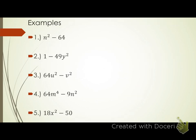Let's go ahead and move on and look at some examples. Number one: n squared minus 64. Step one, we first need to make sure that it is a difference of squares problem. Is there a minus sign between my two terms? Yes, it is a subtraction problem. Can I take the square root of my first term, n squared? Remember, divide the exponent by the index. What's the index of a square root? Two. Is two divisible by two? Yes. So can I take the square root of n squared? Yes, I can.